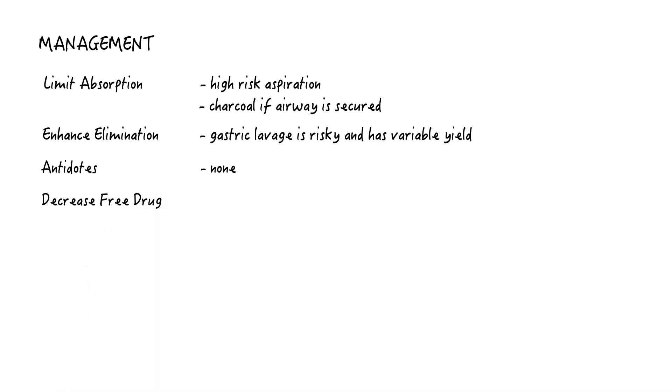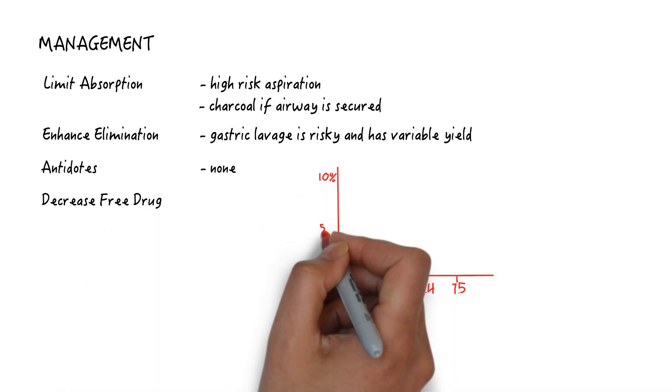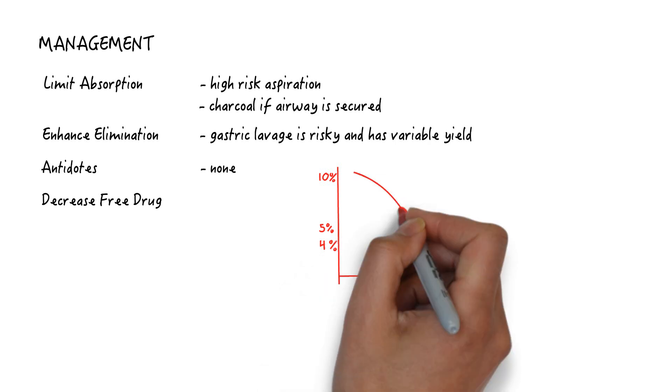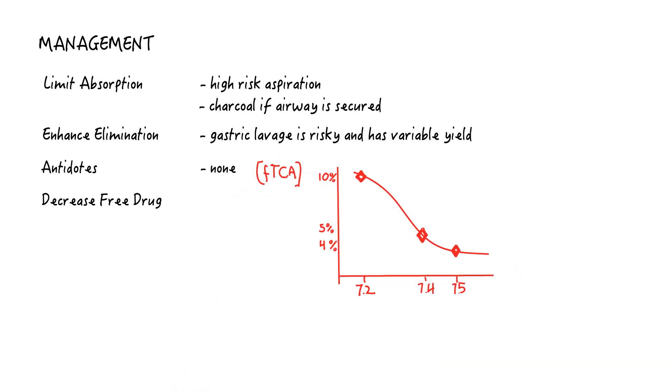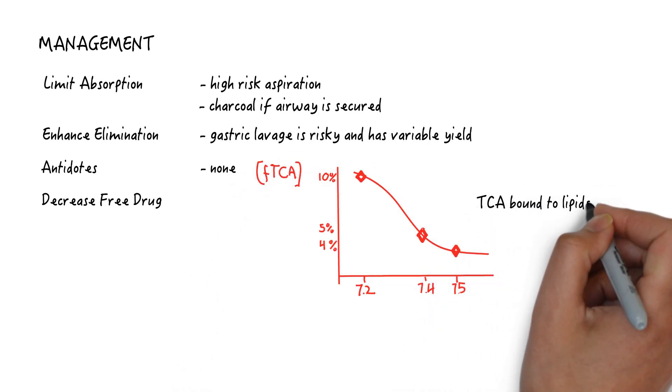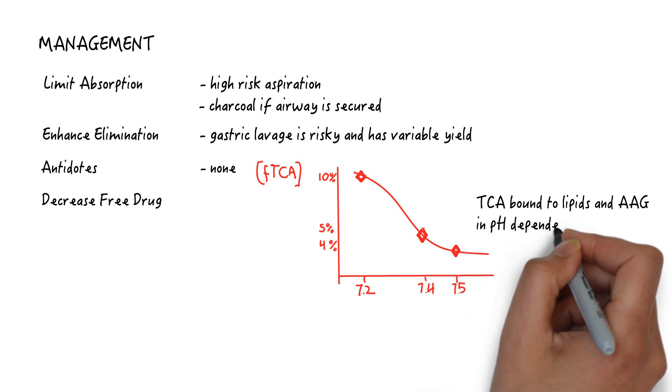And decreased free drug. This is reserved for the most serious of overdoses when we have limited other interventions. TCA is predominantly bound to lipids and AAG protein in the serum in a pH-dependent manner.